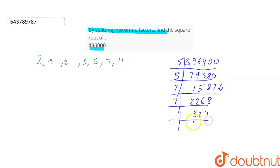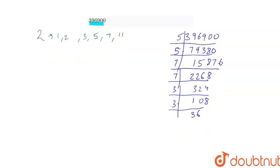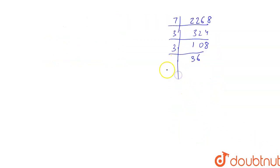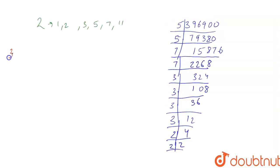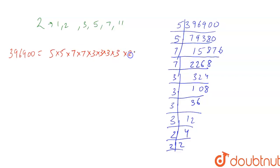Now this number is not divisible by 7, so we will try this number by 3. Dividing by 3 gives us 108, again by 3 gives us 36, again by 3 gives us 12, again by 3 gives us 4, and then 2 and 2. So the prime factors of 396900 are 5 × 5 × 7 × 7 × 3 × 3 × 3 × 3 × 2 × 2.